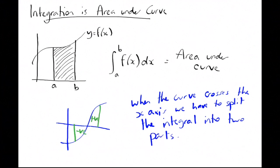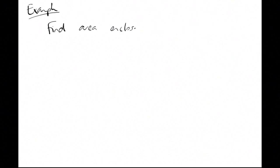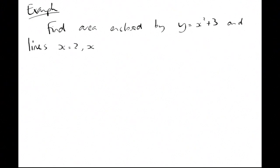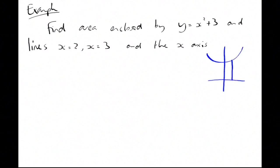An example: find the area enclosed by y equals x squared plus 3, and the lines x equals 2, x equals 3, and the x-axis. That's just as the picture shows — this area between 2 and 3 under the curve. So all we're doing is integrating x squared plus 3 between 2 and 3 in terms of x.